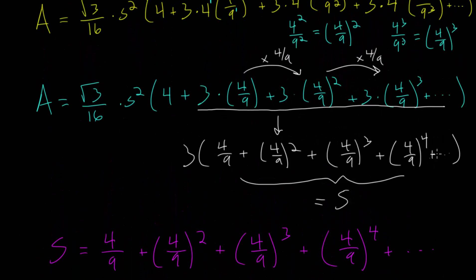We found that this group of terms here is simply 3 multiplied by s, but s is 4 fifths, which makes all of this 12 over 5.